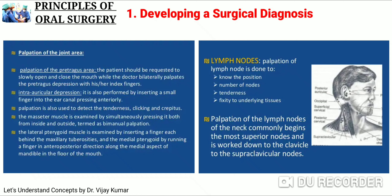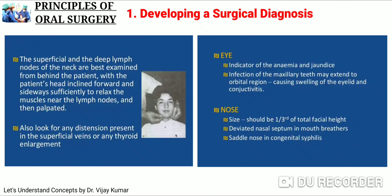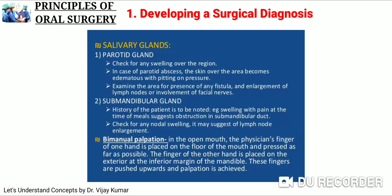In the eyes, we check for anemia and jaundice. Infection of maxillary teeth can extend to the orbital region, causing swelling of the eyelid and conjunctivitis. For the nose, we check size and deviated nasal septum, or saddle nose which is seen in congenital syphilis. For salivary glands, we palpate the parotid gland using bi-digital palpation and the submandibular gland using bi-manual palpation.